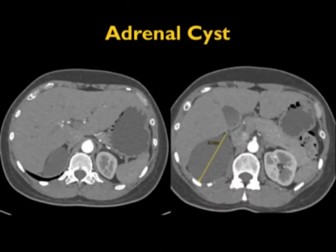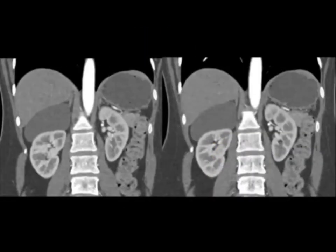Adrenal cysts are typically water density. Here's another example — they typically will push down on the kidney. Very nice example.